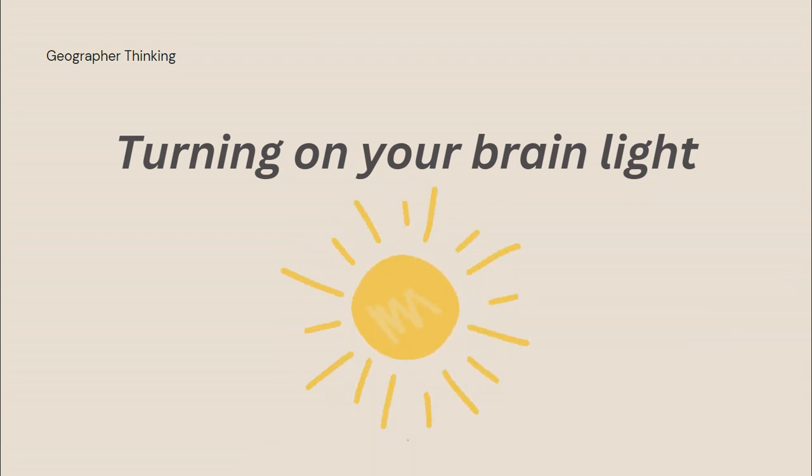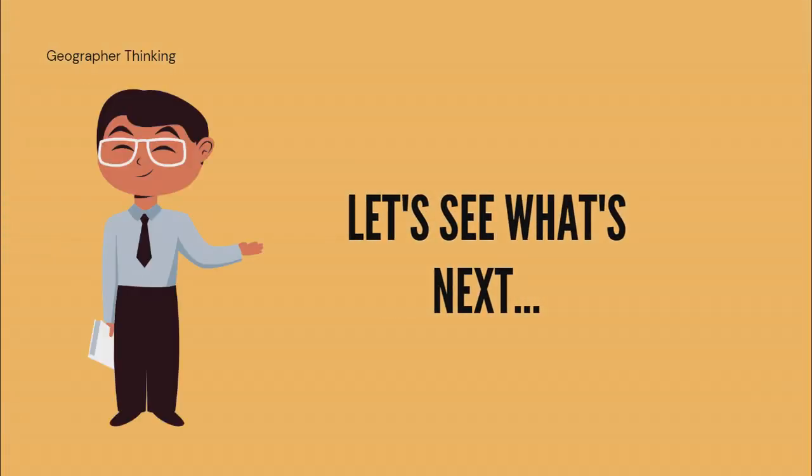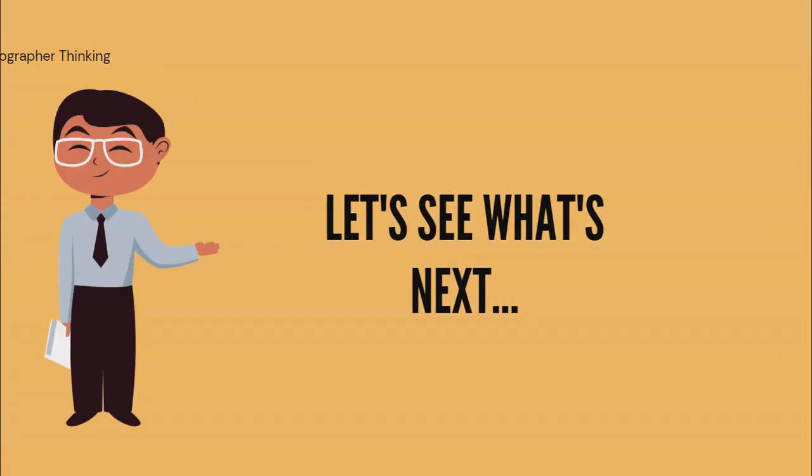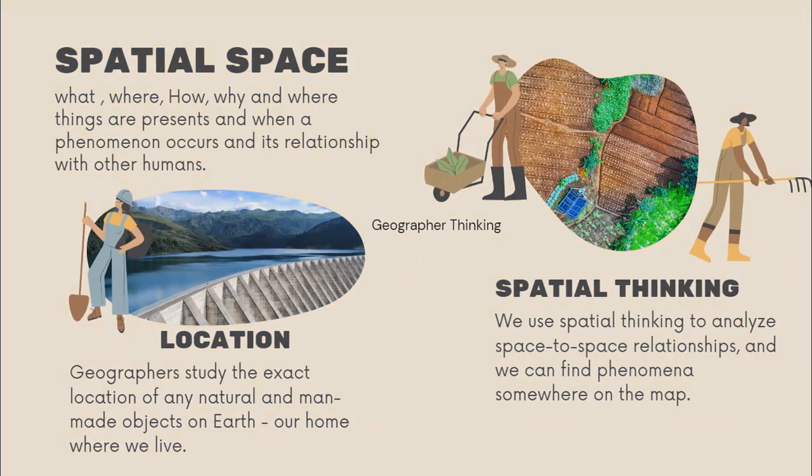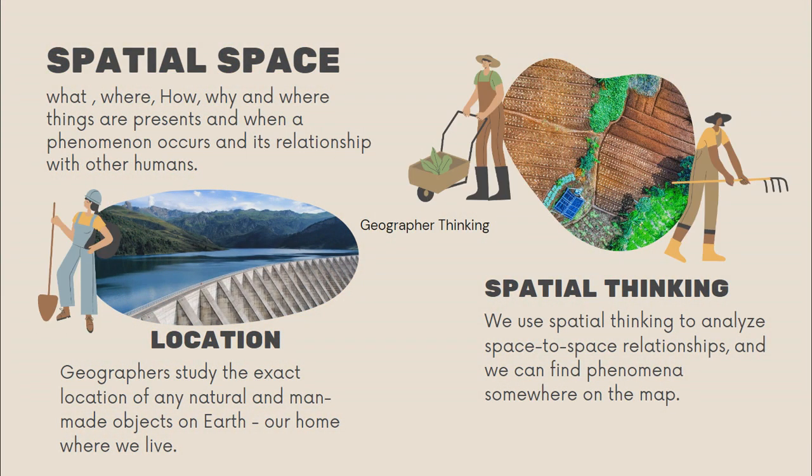In any other discipline or subject, spatial space is not included. But in Geography, we study what, where, why, and when a phenomenon occurs and its relationship with other humans. We use spatial thinking to analyze space-to-space relationships and we can find phenomena somewhere on the map.